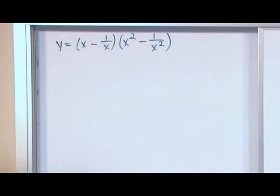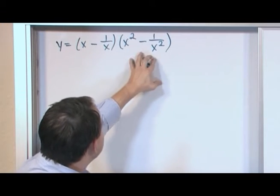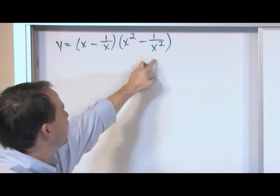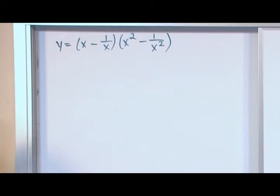Same exact deal. You've got first times the derivative of the second plus the second times the derivative of the first, but because you've got these ugly fractions, you need to rewrite it first.